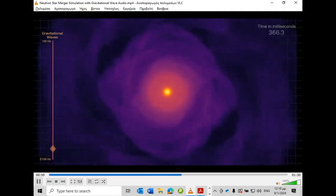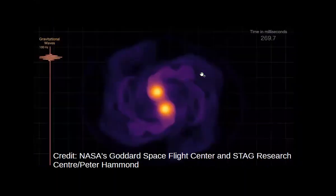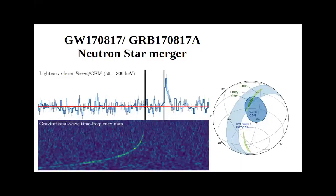In 2017, the gravitational wave frequency-time map was exactly what LIGO and Virgo detected. After the merger time, the frequency moves into ranges LIGO cannot detect. Crucially, 1.7 seconds after merger, Fermi satellite detected a short gamma ray burst. The sky maps from LIGO/Virgo and Fermi were consistent, pointing to the same position, triggering around 70 observatories worldwide to locate the host galaxy.